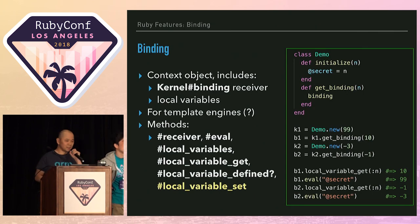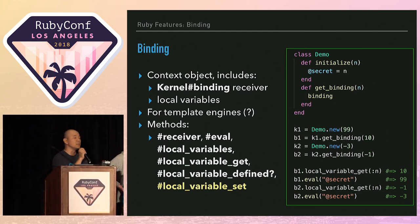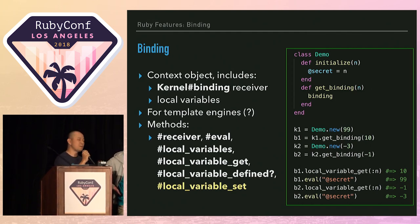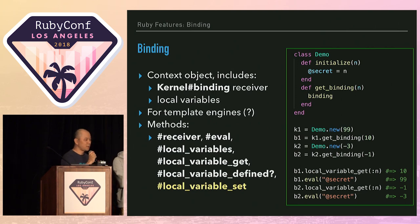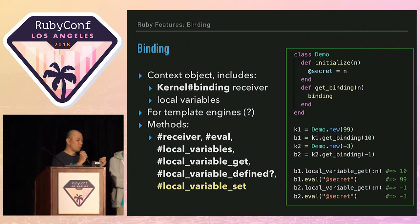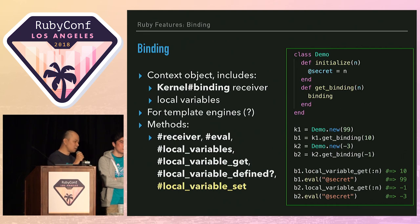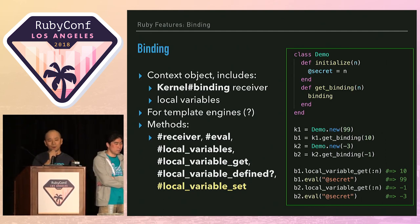First, I will talk about binding. Binding is a kind of context object which includes a set of local variables, instance variables, and many others. In many cases, binding is used for template engines. This sample code shows how to get a binding object from the context of a method getBinding, and then get the value of variables like the local variable n or instance variable secret using the local_variable_get method. The binding class also has other methods like receiver, eval, local_variables, local_variable_get, local_variable_define, and local_variable_set.